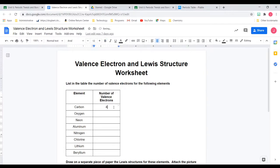So you're going to go through and you're going to figure out for oxygen, neon, aluminum, nitrogen, chlorine, lithium, and beryllium.